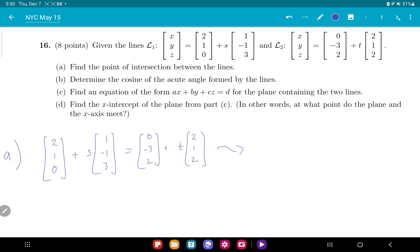So I'll bring my s and my t over to the same side. I get s times (1, -1, 3) minus t times (2, 1, 2) is equal to, I'll bring this vector over there, so I get (-2, -4, 2).